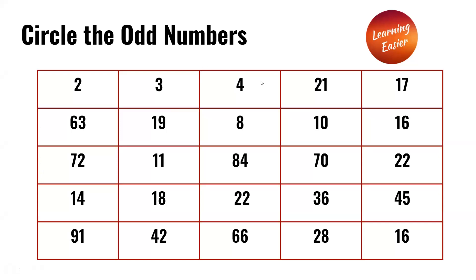Circle the odd numbers. Odd numbers have 1, 3, 5, 7, 9 in their ones place.